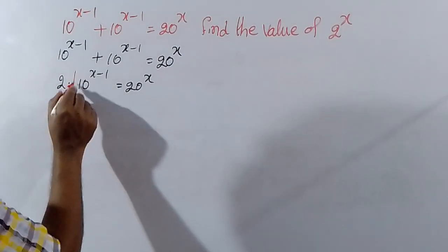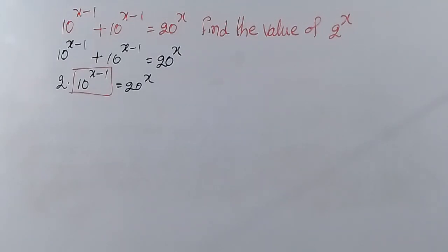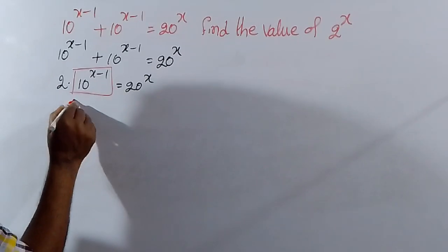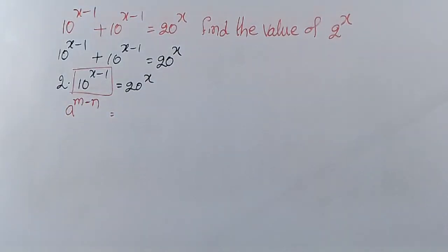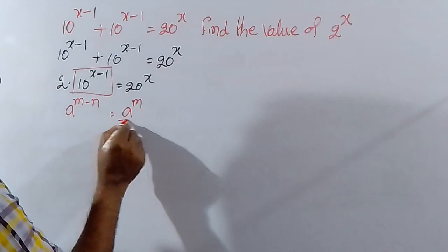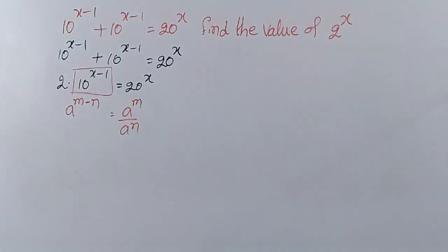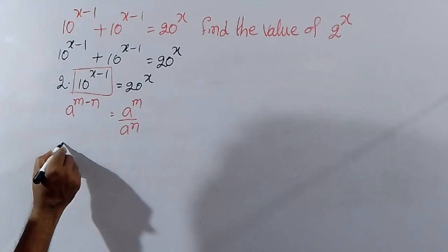Now, 10 power (x minus 1) is equal to 10 power (x minus 1). This is in the form of a power (x minus 1). What is the formula for a power (x minus 1)? It is a power x divided by a power 1.